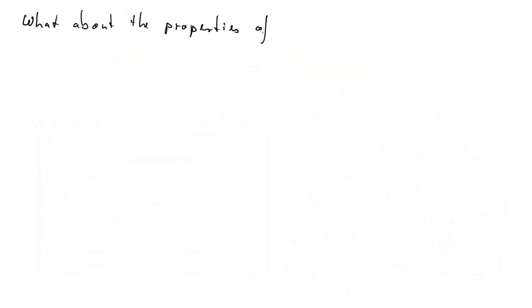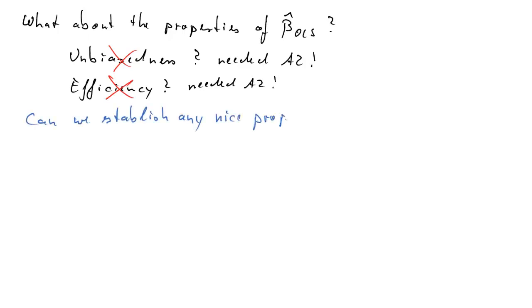Now, given that, what about the properties of our OLS estimators beta hat? And I'll give it an OLS subscript saying OLS estimators. Firstly, unbiasedness. We needed that assumption a2, so we can't expect our parameter estimates to be unbiased. The same for efficiency, we also needed assumption a2. So these properties are unlikely to hold. Now, can we establish any nice properties for beta hat OLS when we are using time series data? Fortunately, the answer to that is yes.